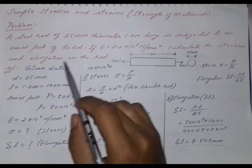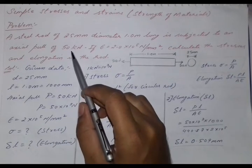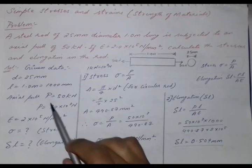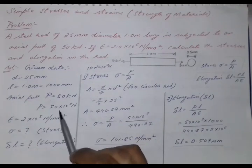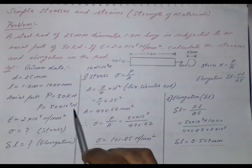It is subjected to an axial pull of 50 kN. 50 kN is the load. Load is denoted by capital P. So 50 kN can be written in terms of Newton as 50 into 10 power 3 N.